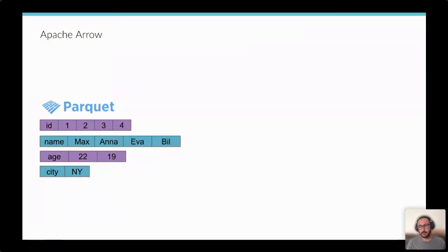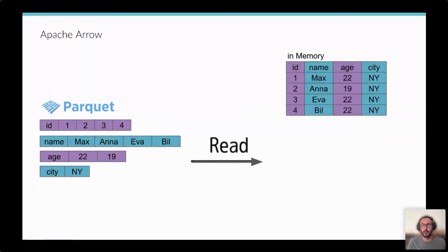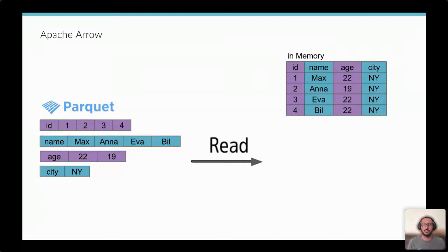Parquet is great for storing and selecting data on disk, but there's one big challenge: when you read that information from various engines, they need to deserialize the data and load it into memory in row-based format. So every benefit you had with Apache Parquet on disk disappears, because you still need to process data in memory in row-based format.